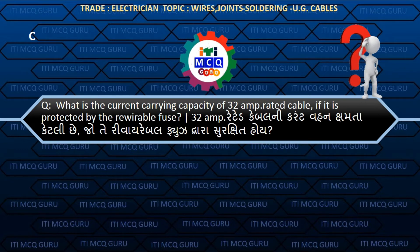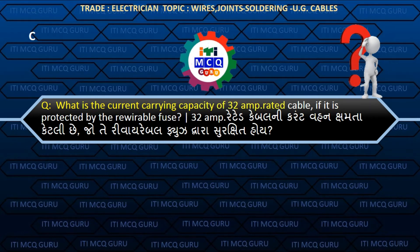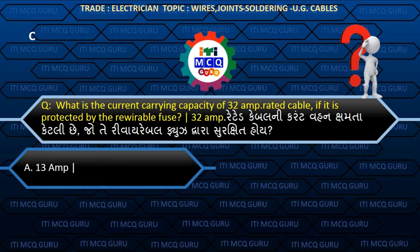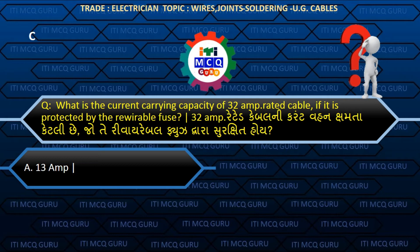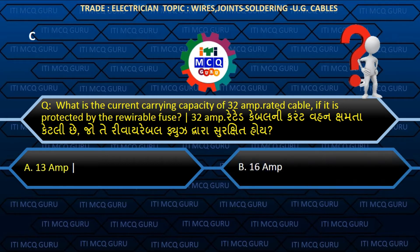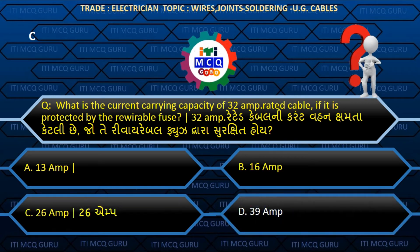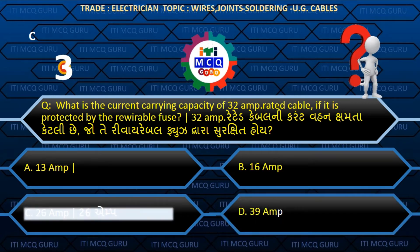What is the current carrying capacity of a 32 AMP rated cable if it is protected by a re-wireable fuse? (32 AMP rated cable ni current vahan shamta ketli che jo te re-wireable fuse dwara shurakshit hoi.) Answer C: 26 AMP.